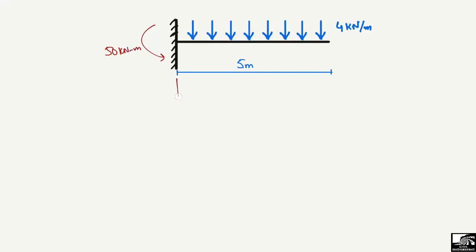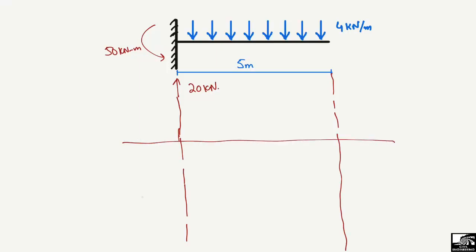First, we draw the reference lines for the shear force and bending moment diagrams. These reference lines are drawn — one for the shear force and one for the bending moment. The shear force is represented in kilonewton and the bending moment in kilonewton·meter.